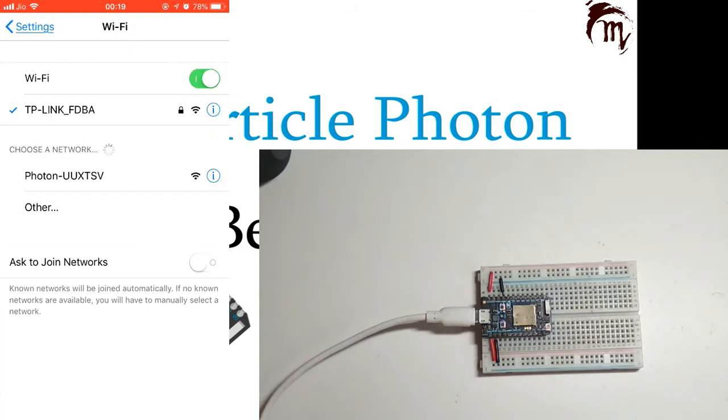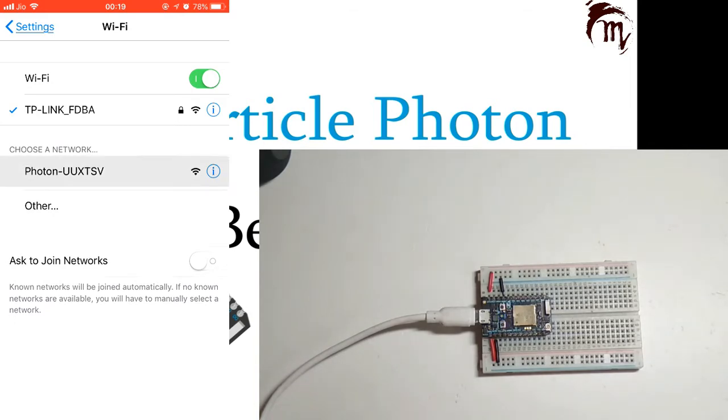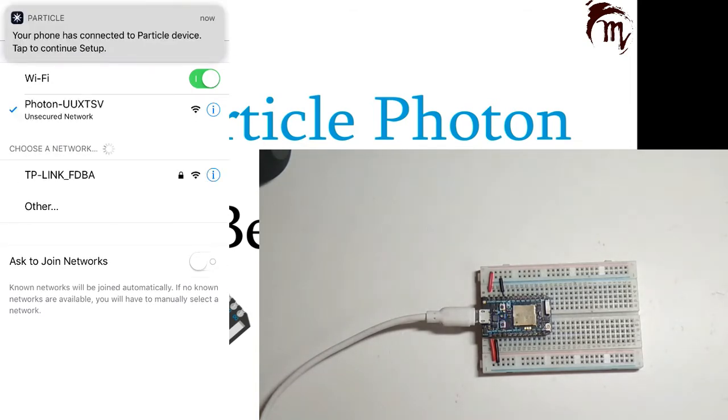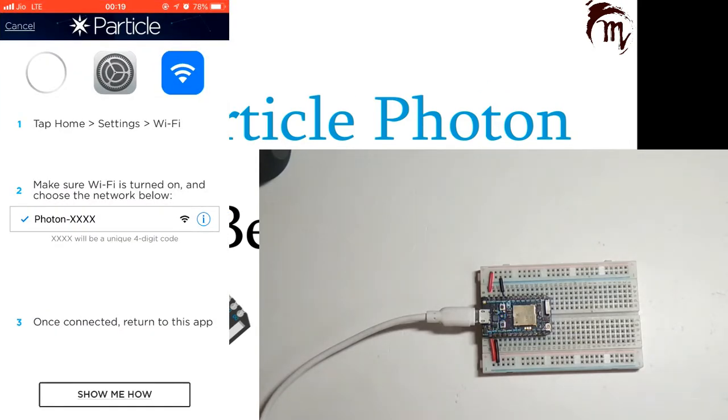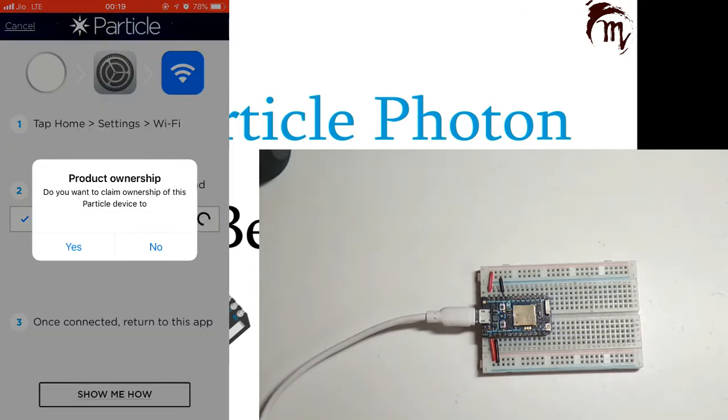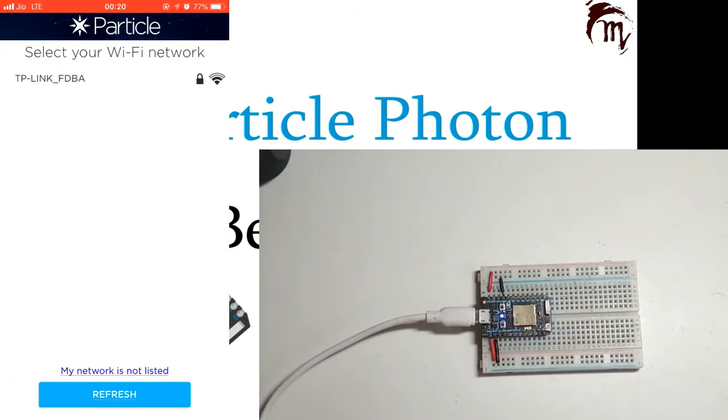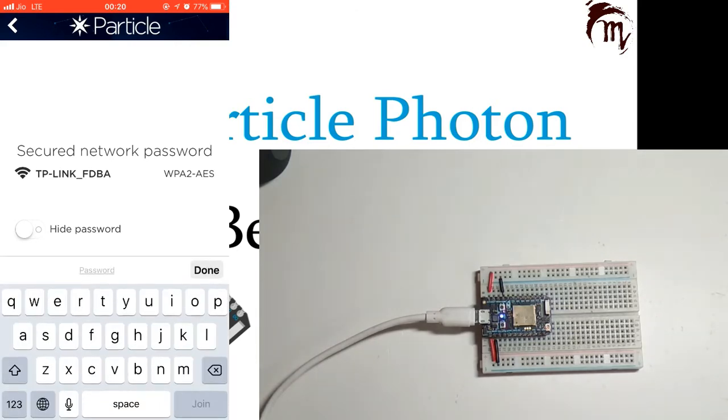Now you need to go to your setup, then click on WiFi. The WiFi network of Photon will be shown here. Just click on it, it will connect, and the app will ask you which WiFi network you want to program it with. I will select my network and provide the password for my home WiFi network.